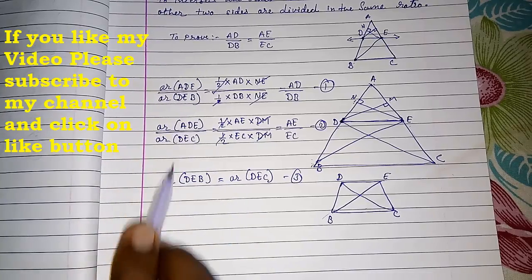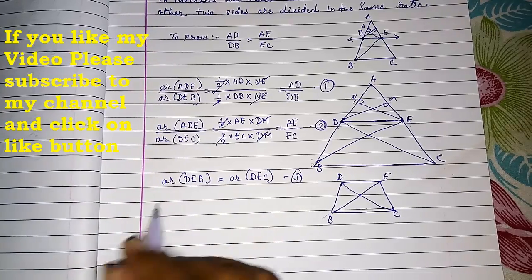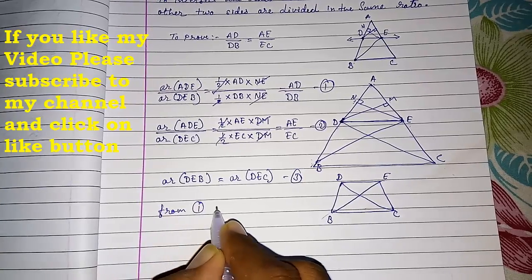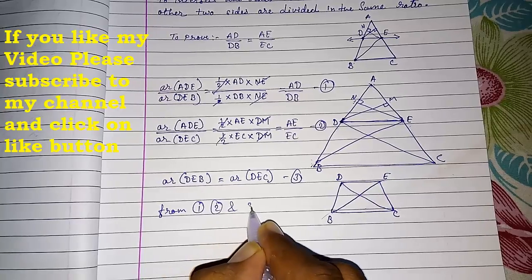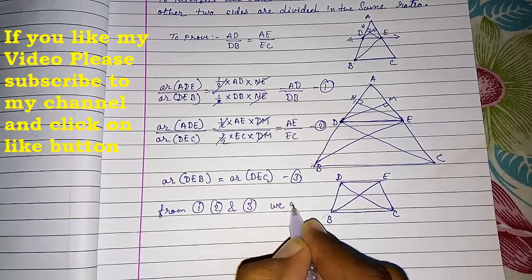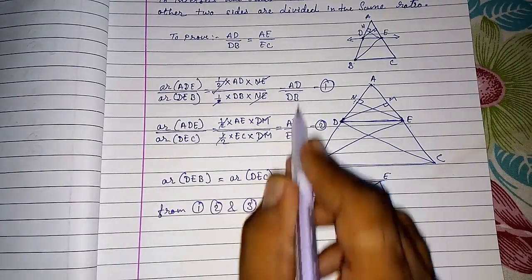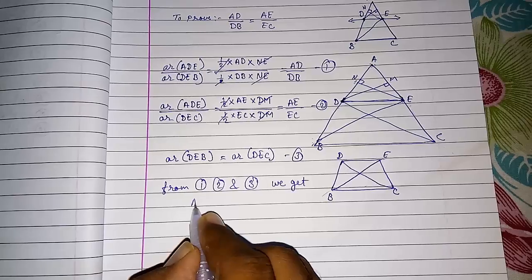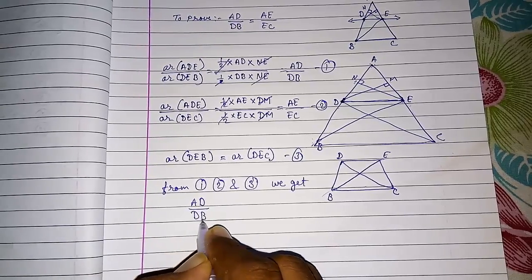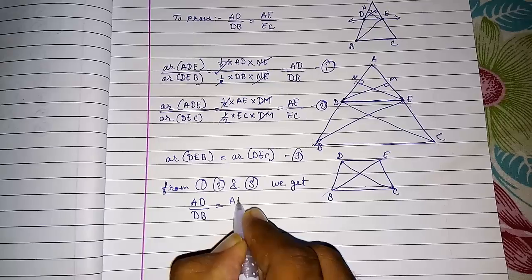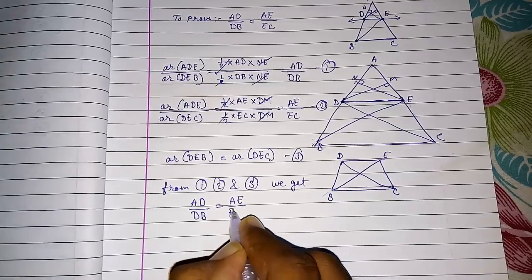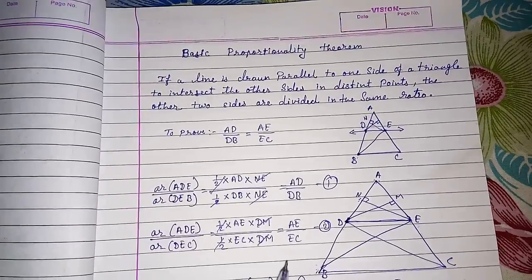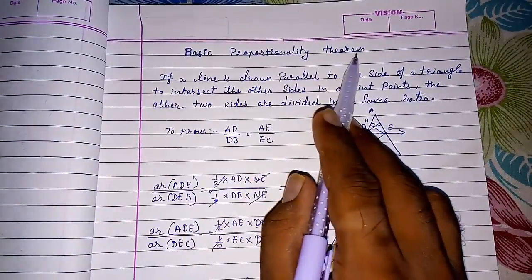Now look here. Numerators were same and denominators we had proved in result three. So from one, two and three we get directly. These two are equal, denominators are equal, so these two will be also equal. Directly from one, two and three we can say that AD upon DB equals to AE upon EC. Hence proved. So this way easily we can prove basic proportionality theorem.